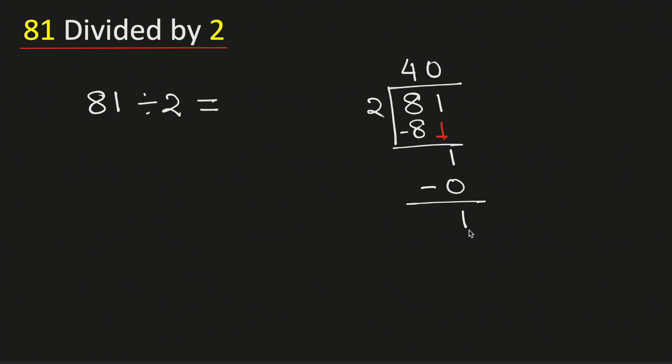Now see that in this case, although 1 is less than 2, but we cannot bring down any number here. That is why we need to put a decimal here so that we can write 1 0.